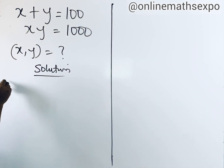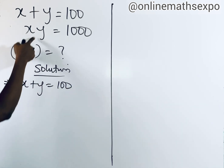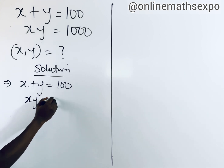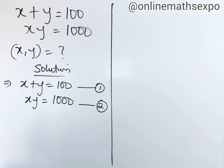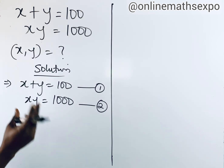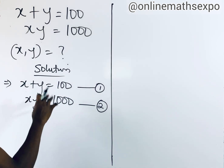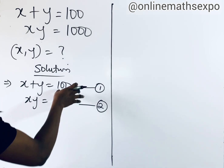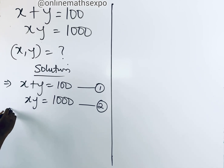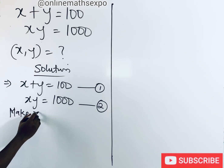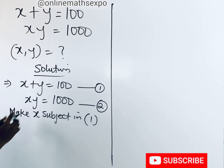So to answer this question, we begin with the solution. We have x plus y equals 100, and x times y equals 1000. Label this equation one and this equation two. Now you are free to make either x or y the subject in any of these equations. I want to go with equation one and make x the subject.